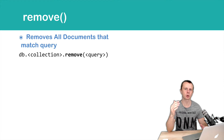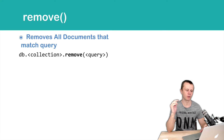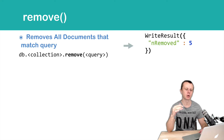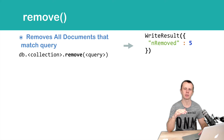As an argument you pass a query. If documents were found and deleted, you will get a WriteResult with the number of removed documents. In this example, nRemoved is 5.